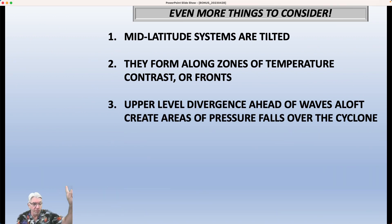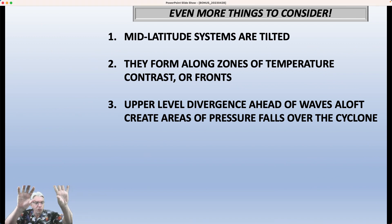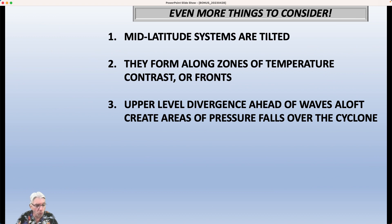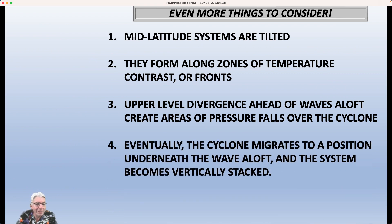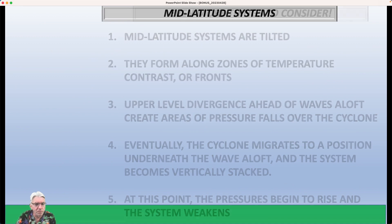Upper-level divergence ahead of the wave along the upper-level system creates an area of pressure falls over the cyclone. How does upper-level divergence cause pressure falls? In general, the winds are much stronger in the upper levels of the atmosphere. So if you are removing more mass up there than you are bringing in at the bottom, you are removing mass and the pressure is going to drop. That area needs to be over top of the low pressure area at the ground, which means the wave along has to be to your west. Once the wave passes, it's exactly the opposite. Eventually the cyclone migrates underneath the wave, upper-level divergence is no longer over the surface low, and the system is then vertically stacked. The pressure starts to go up and the system begins to weaken. That's basically the life cycle of a mid-latitude cyclone.